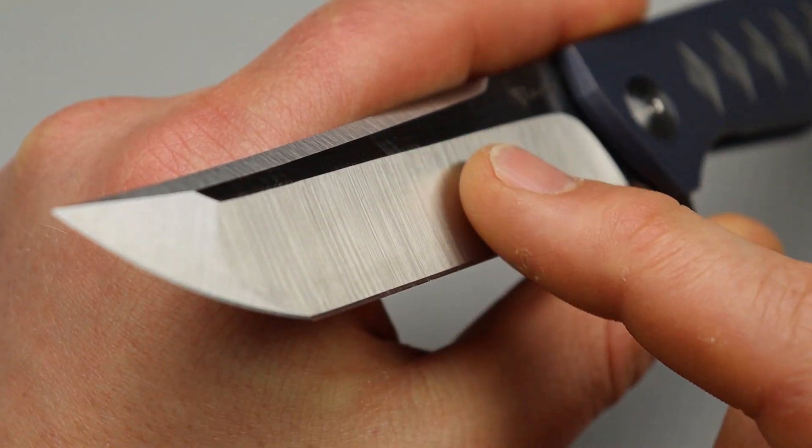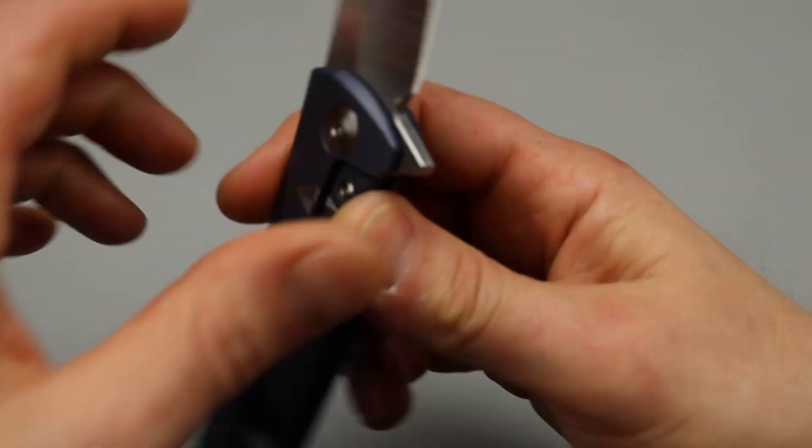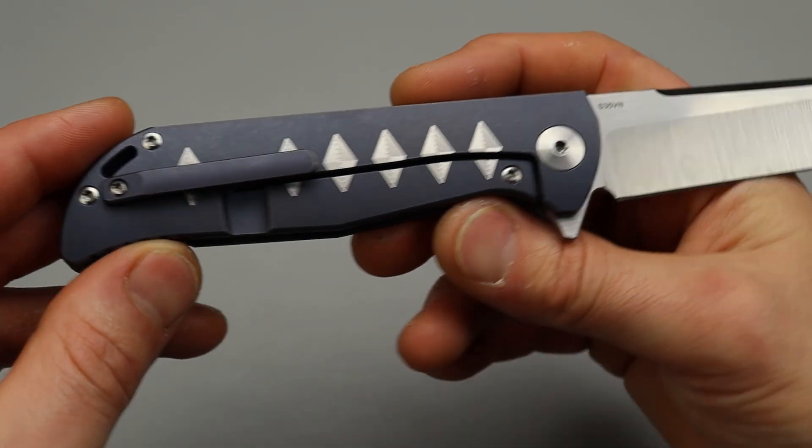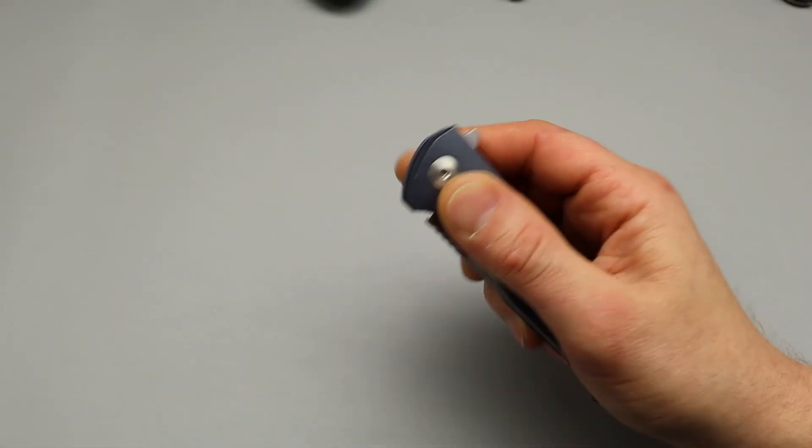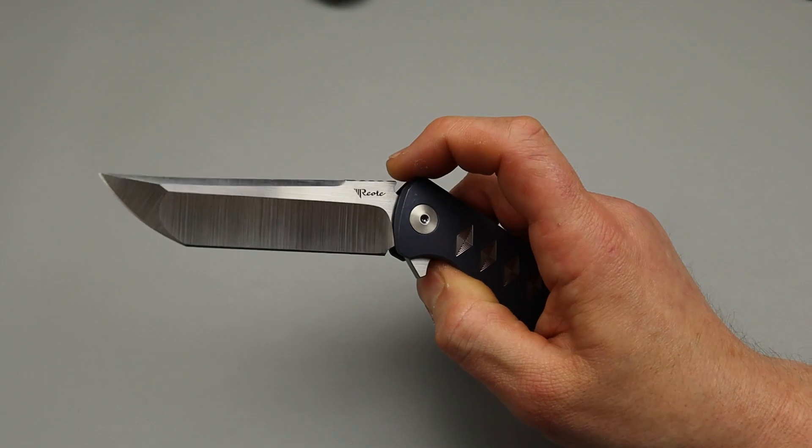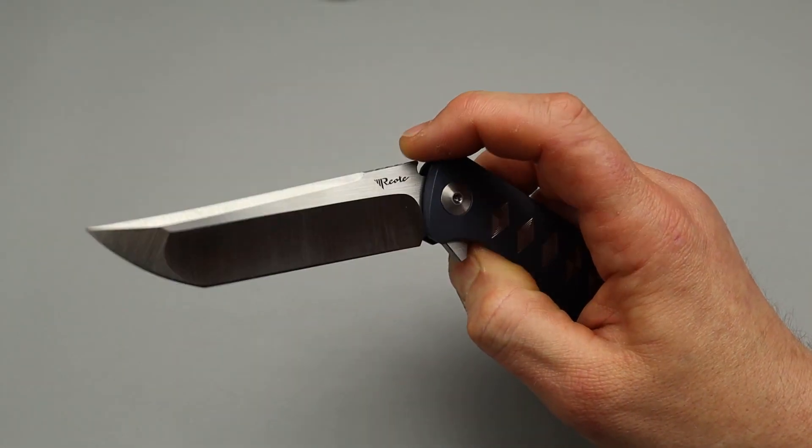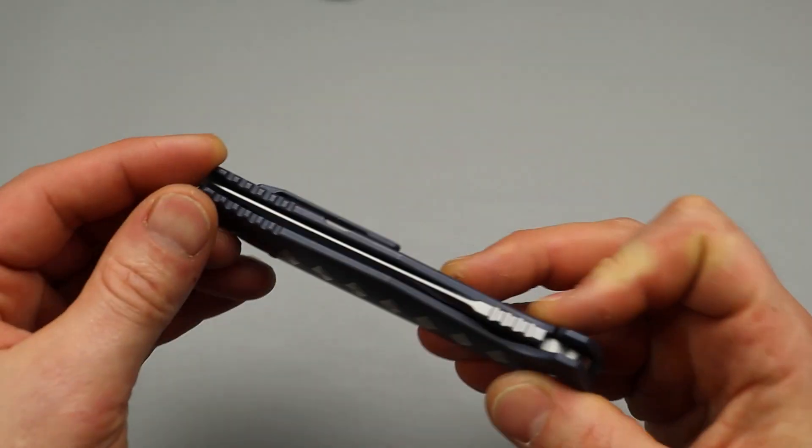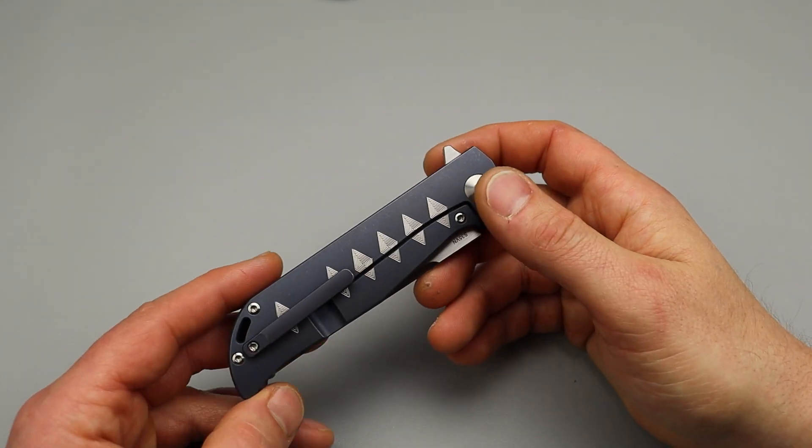Beautiful grind. We have a hollow grind here, and then a flat grind up here on this Tanto. It is S35VN. Beautiful knife. The action is so good. The detent and flipping action is perfection. Perfectly centered.